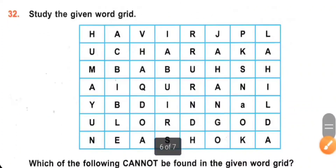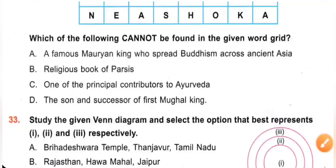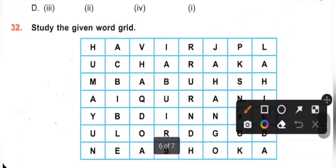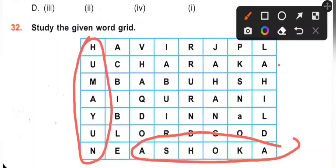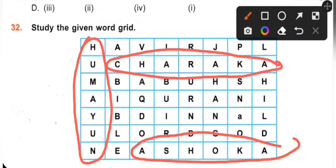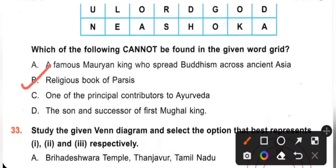Question 32: Study the given word grid. Which of the following cannot be found in the given word grid? A. A famous Mauryan king who spread Buddhism across ancient Asia — that is Ashoka. B. Religious book of Parsis — that is Zend Avesta. C. One of the principal contributors of Ayurveda — that is Charaka. D. The son and successor of the first Mughal king — that is Humayun. Ashoka, Humayun, and Charaka are all found in the word grid, but Zend Avesta is not. Option B is the correct answer.